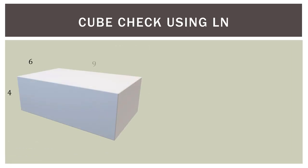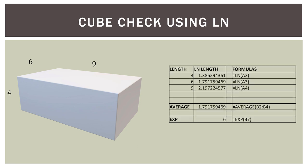We can verify this using our three-dimensional box with sides 4, 6, and 9. In Excel, we take the natural log of each of those lengths, find their average — 1.791759469 — then use the EXP function, which is E, to raise E to that power. We get the value of 6, which is exactly what we found before: the uniform side length of a cube with the same volume as the original box.